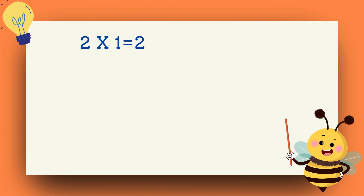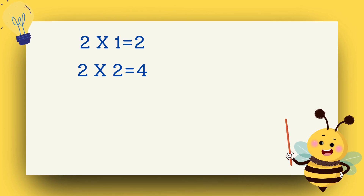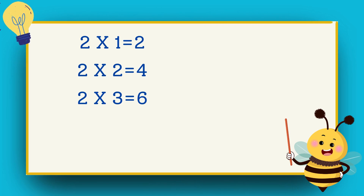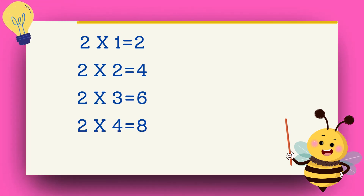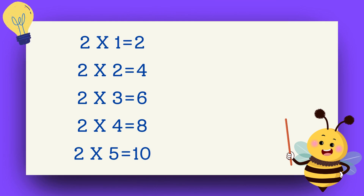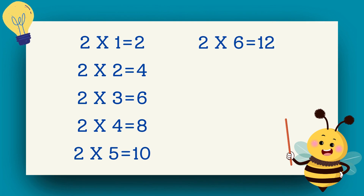Two ones are two. Two twos are four. Two threes are six. Two fours are eight. Two fives are ten. Two sixes are twelve.